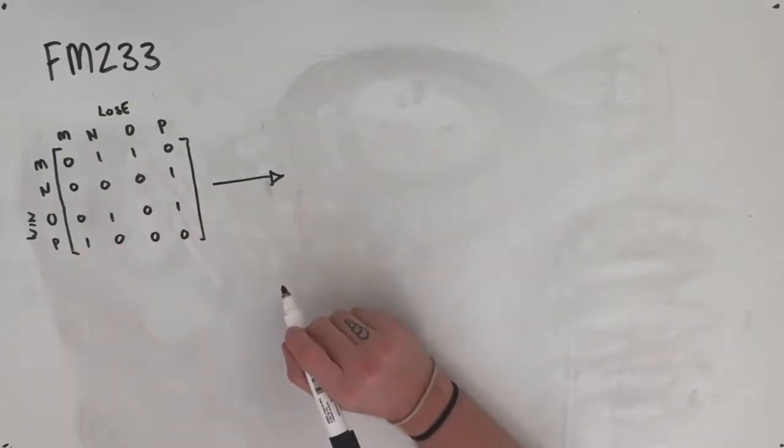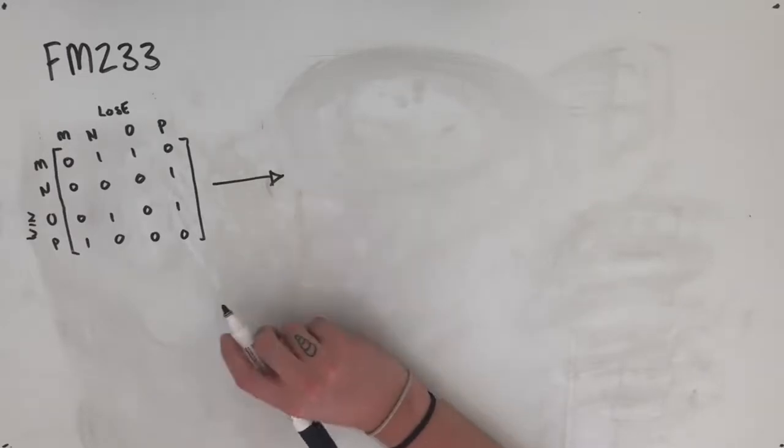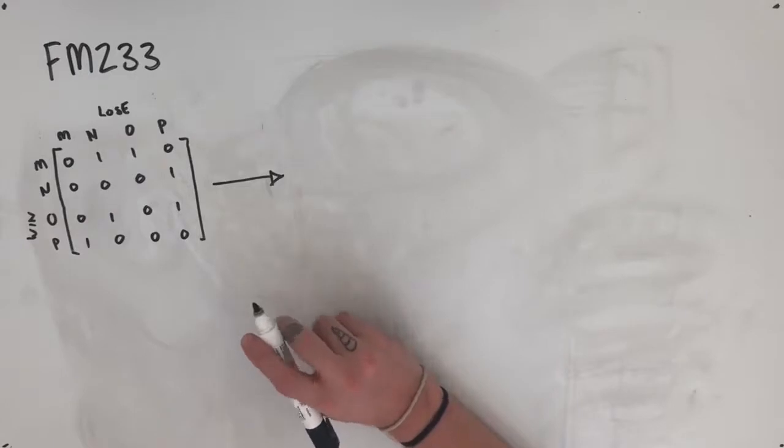Each player in the tournament was ranked according to the sum of their one-step and two-step dominance. The player with the highest sum was ranked number one, the player with the second highest sum was ranked number two, and so on.